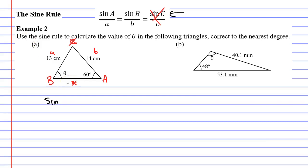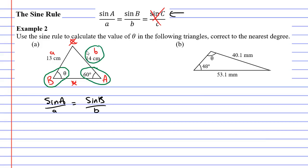Below our triangle we'll copy our formula down: sine capital A over lowercase a equals sine capital B over lowercase b, and we're going to substitute values in. Capital B is θ, capital A is 60 degrees, lowercase b is 14, and lowercase a is 13. So sine A, which is sine of 60, over lowercase a which is 13, equals sine of capital B — which is θ — over lowercase b which is 14.